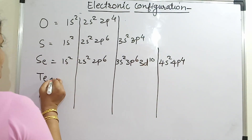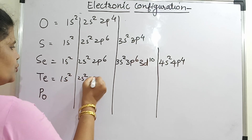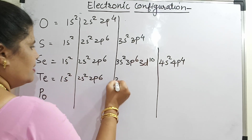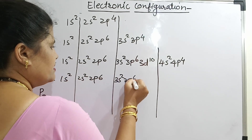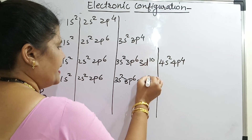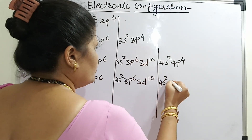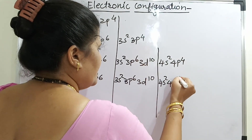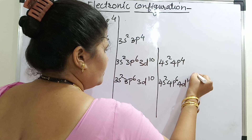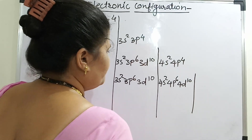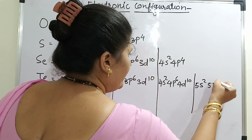Come to tellurium: 1s2, 2s2, 2p6, then 3s2, 3p6, 3d10, then 4s2, 4p6, 4d10. What will be next? 5s2 and 5p4.